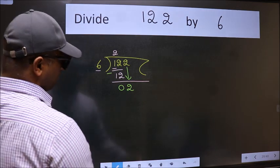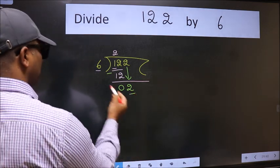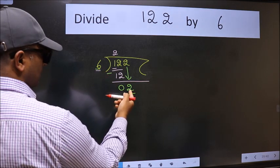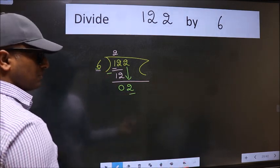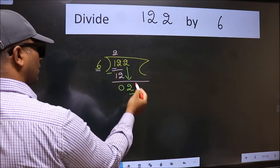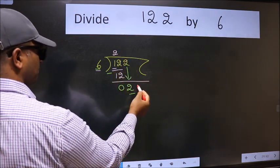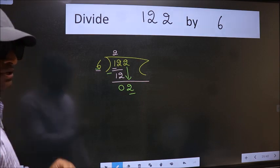And the mistake is this: Here we have 2 and here 6. 2 is smaller than 6, so what many do is they directly put the decimal point and take 0. Which is wrong.